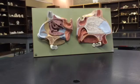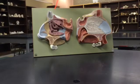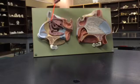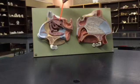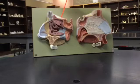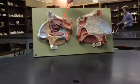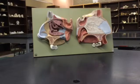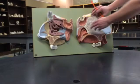The roof of the nasal cavity is made up of the nasal bone, the frontal bone, the cribriform plate of the ethmoid bone, and the body of the sphenoid.